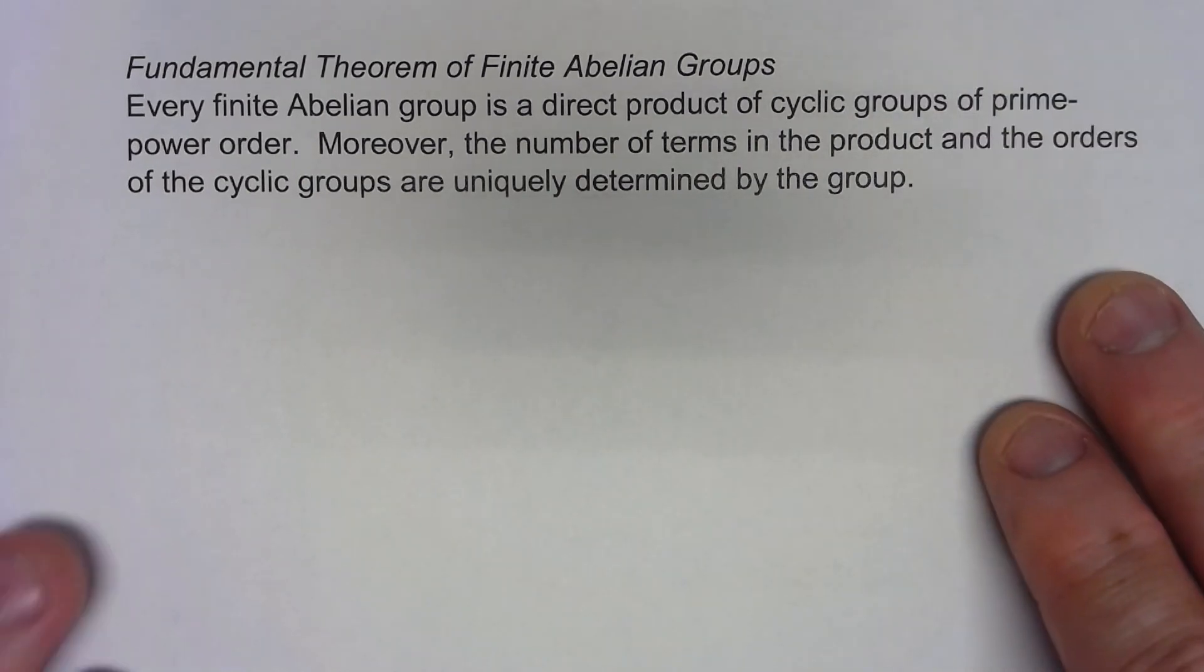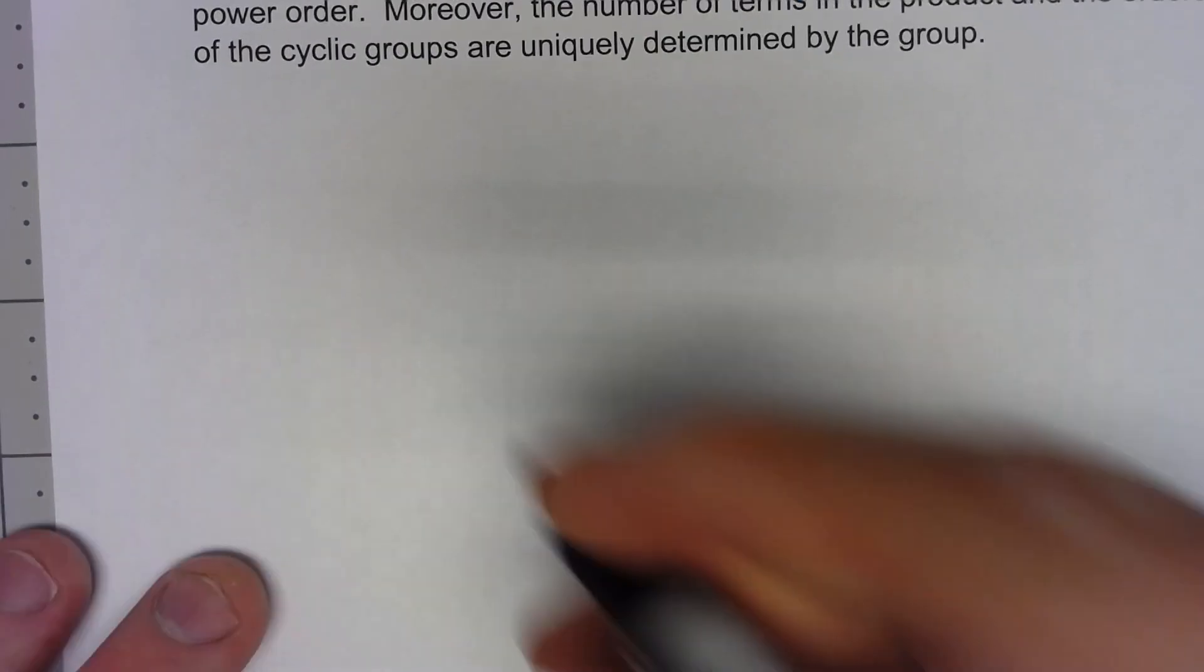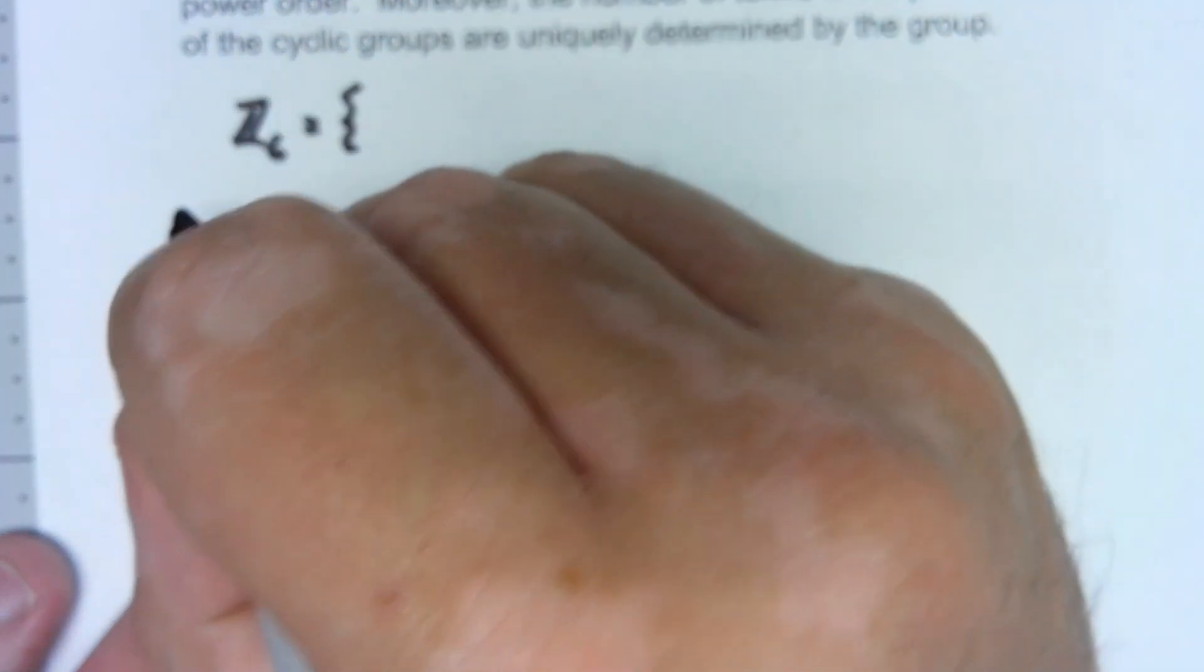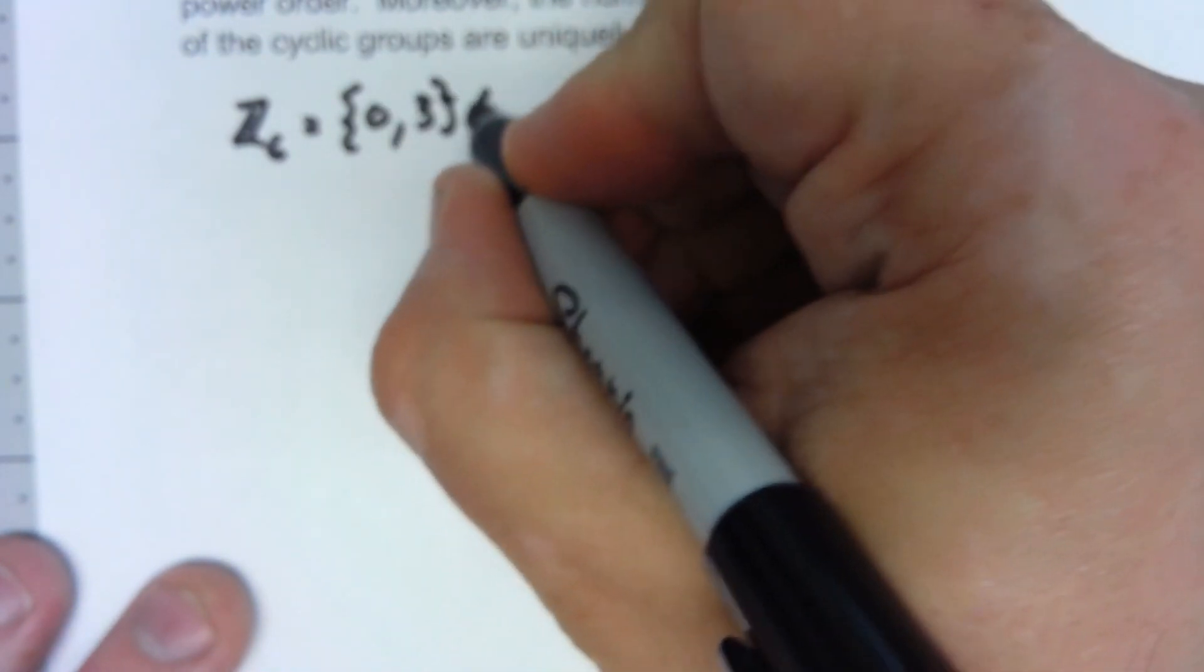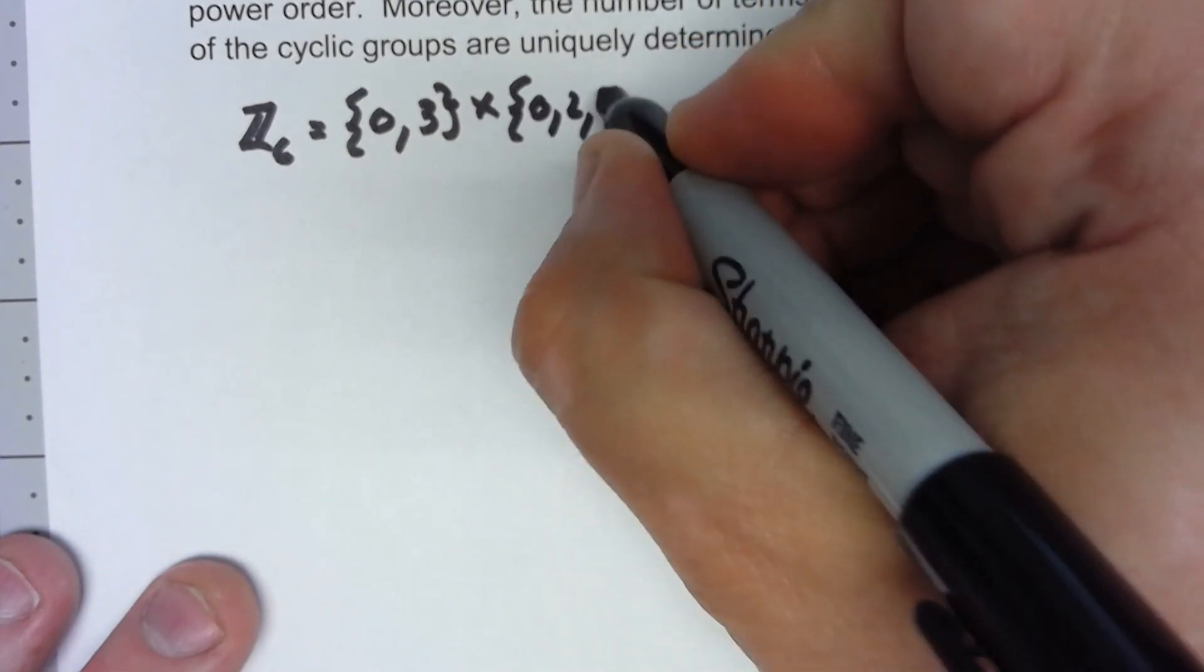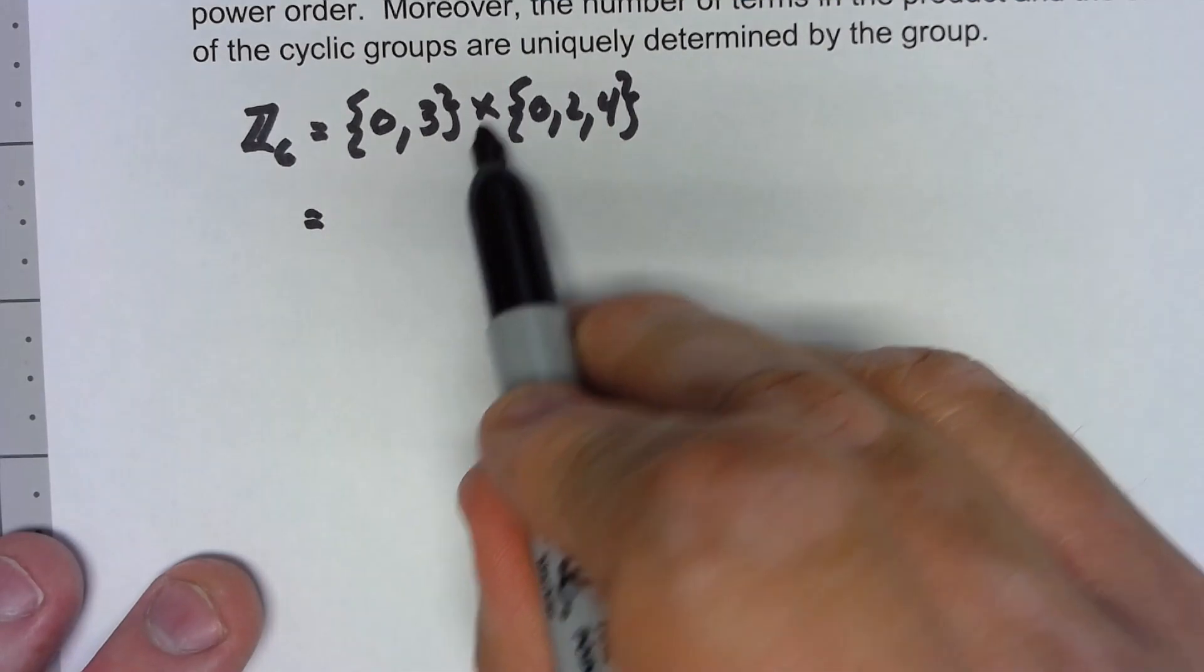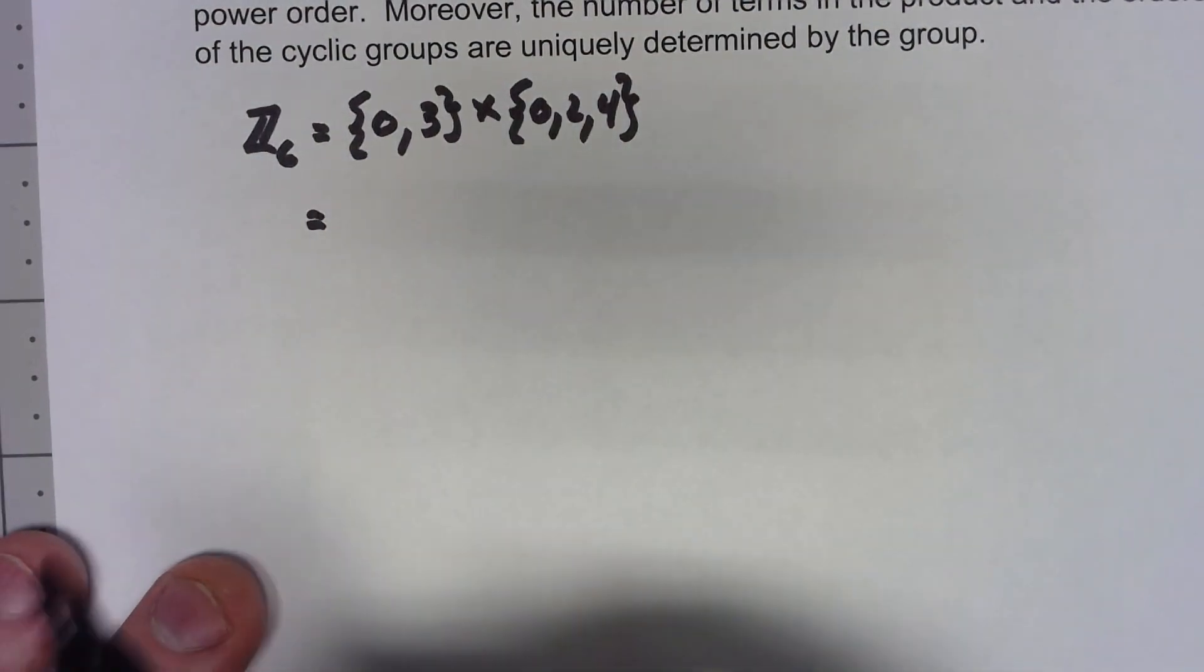Let's take a look at that. Let's start with a simple example. Let's say I have Z6, and it doesn't take much to show that this is the direct product of {0, 3} and {0, 2, 4}.